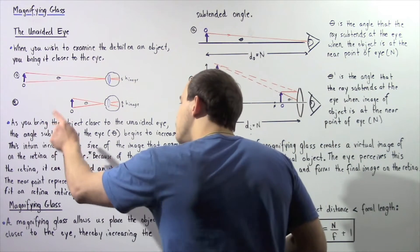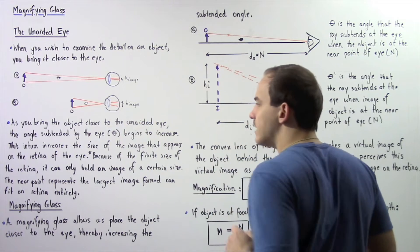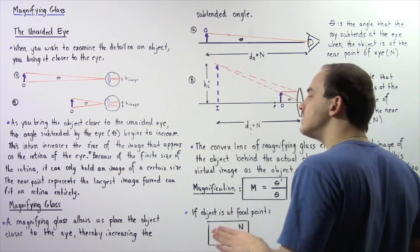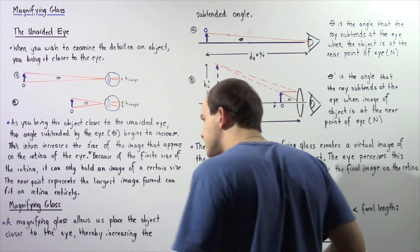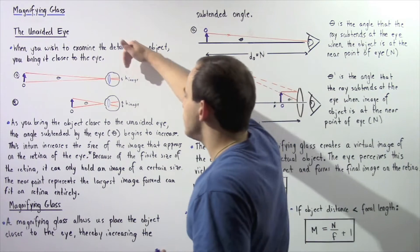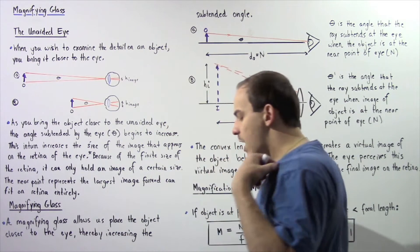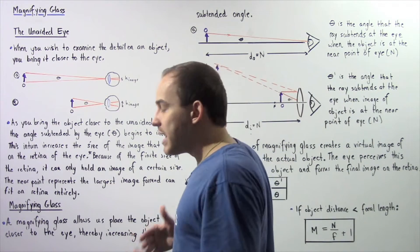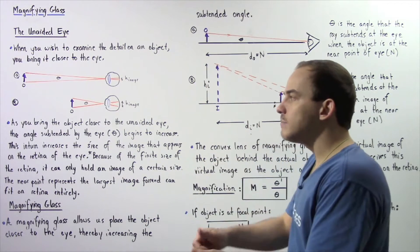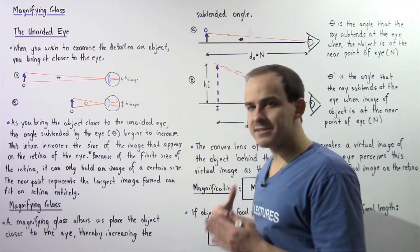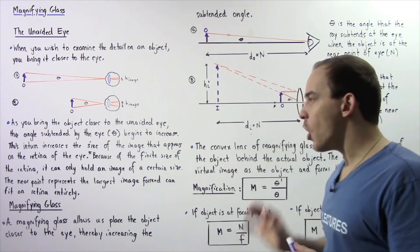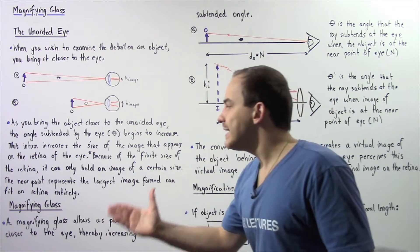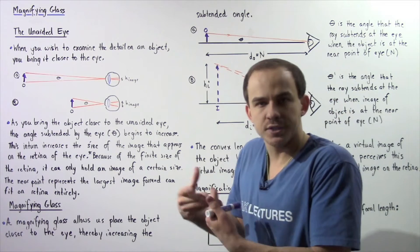As you bring the object closer to the unaided eye, the angle subtended by the eye given by theta begins to increase, and this increase in turn increases the size of the image that appears on the retina of the eye. Now, the retina of the eye has a certain amount of area to it, and eventually if the image becomes greater than the actual retina itself, that image will not appear focused. Because of the finite size of the retina, it can only hold an image of a certain size.